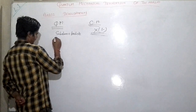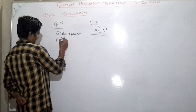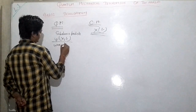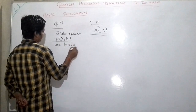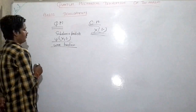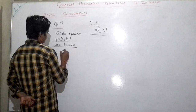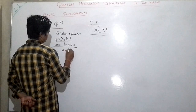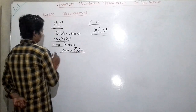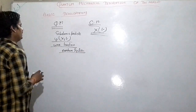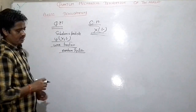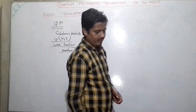In the same way, instead of position as in classical mechanics, in quantum mechanics we use what we call ψ(x,t), the wave function. This wave function contains all the information related to the quantum system, and it is a function of both position and time.